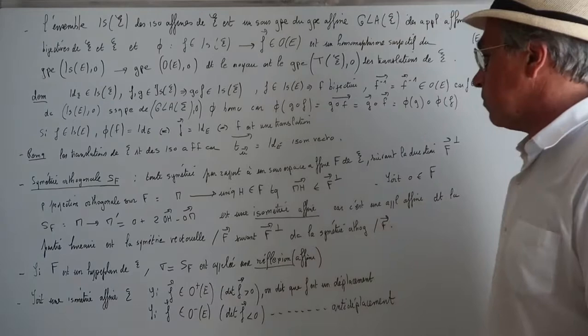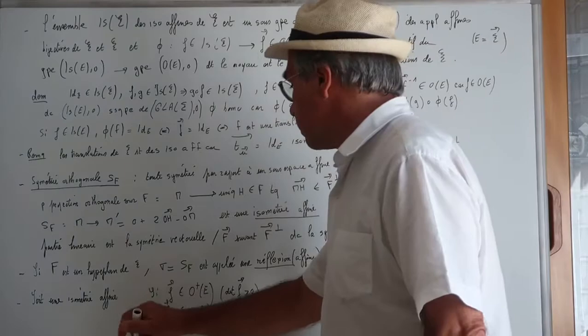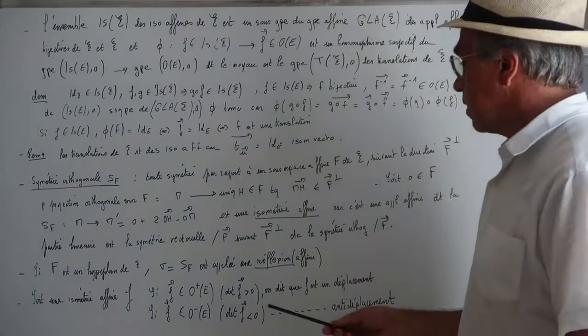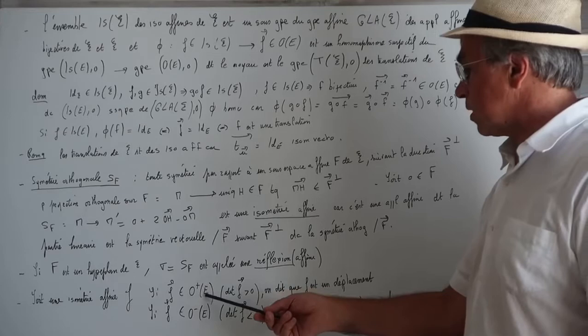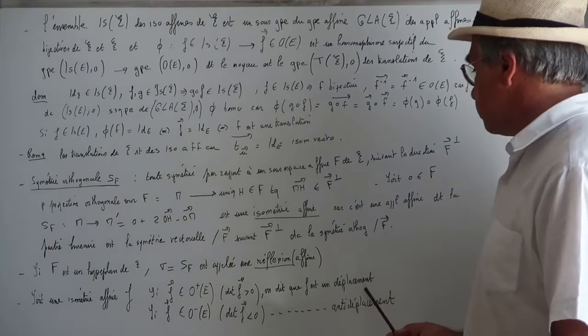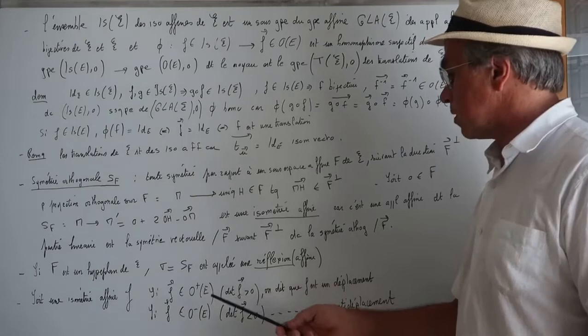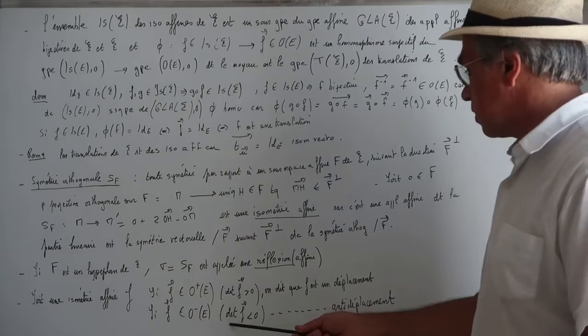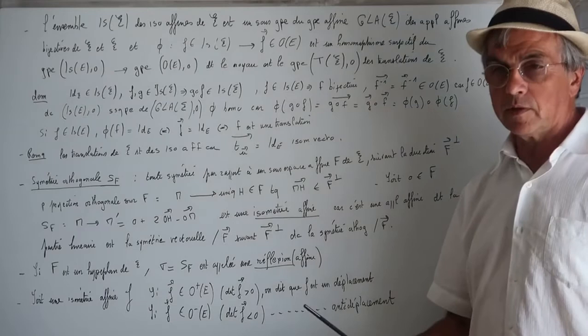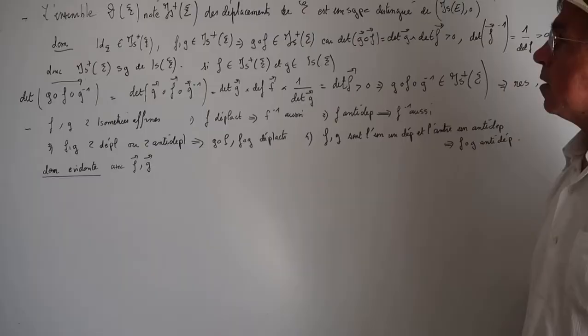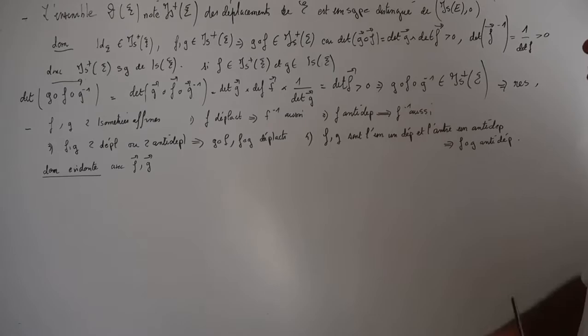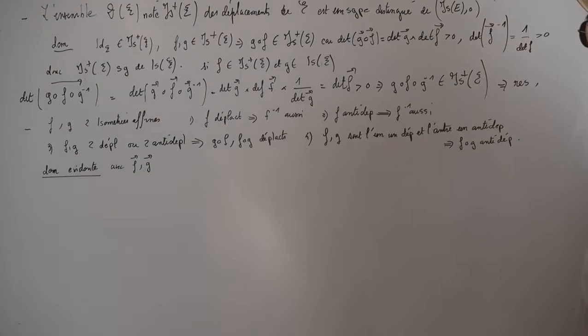Si la partie linéaire de F appartient à O+(E), c'est-à-dire aux isométries vectorielles de déterminant positif, on dit que F est un déplacement. Si la partie linéaire de F appartient à O-(E), déterminant négatif, on dit que c'est un antidéplacement. Rappel : le déterminant de la partie linéaire ne dépend pas de la base choisie. Propriété : l'ensemble des déplacements, noté Is+(E), est un sous-groupe distingué de l'ensemble des isométries de E.